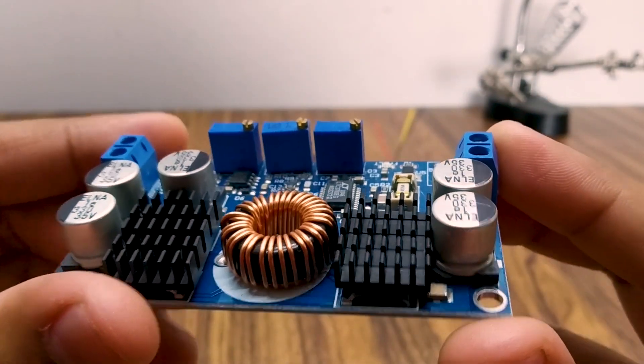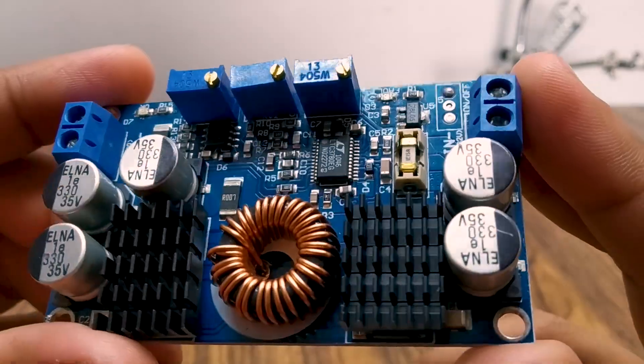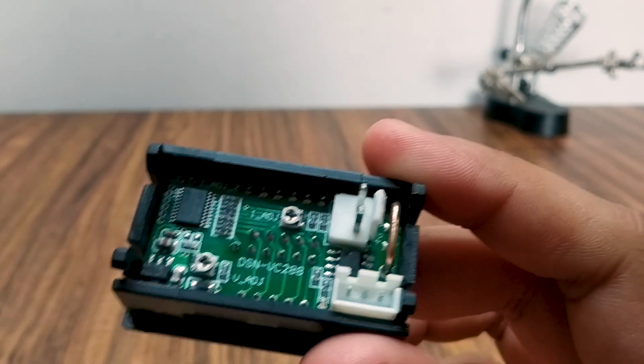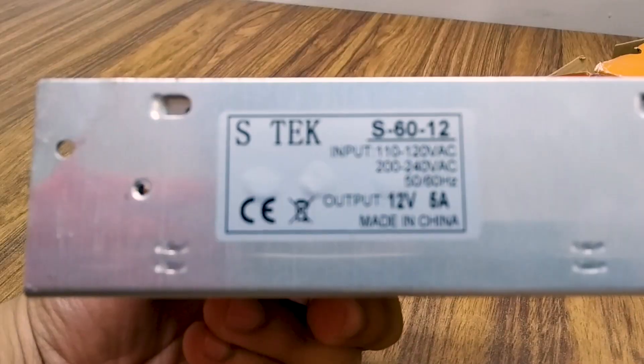I had planned to use this LTC3780 step up down regulator module and this voltmeter ammeter module for the display. I powered it with this 12 volt 5 amp power supply.